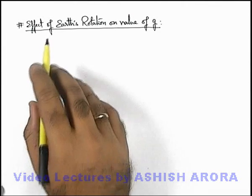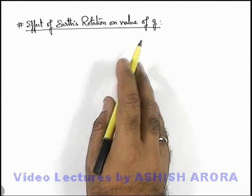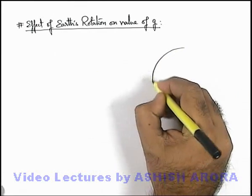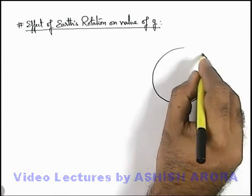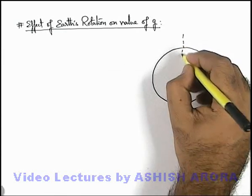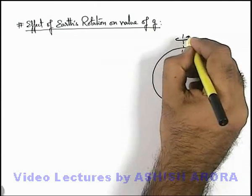Let us discuss the effect of Earth's rotation on value of g at various points on its surface. If we consider this is Earth, and we know well that about its axis of rotation Earth is in continuous rotational motion.